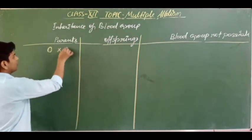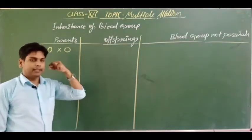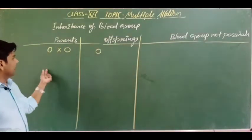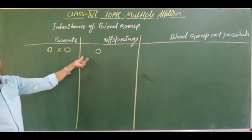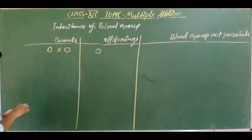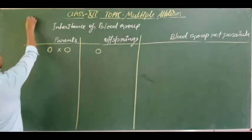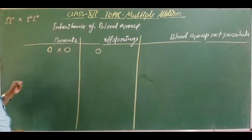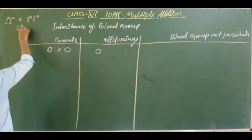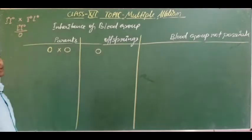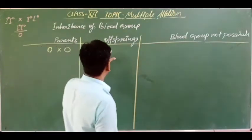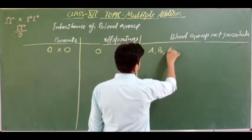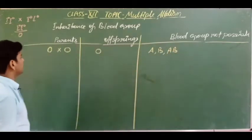First case: if both parents have blood group O (I^0 I^0 × I^0 I^0), the cross gives only I^0 I^0 offspring. So the possible blood group in offspring is only O. The impossible blood groups are A, B, and AB.